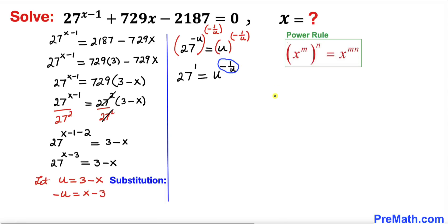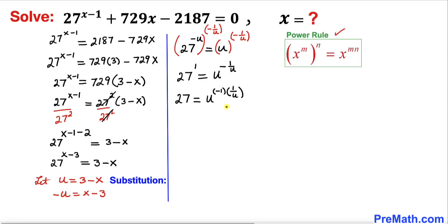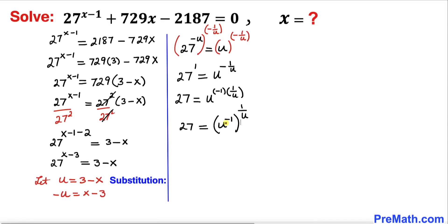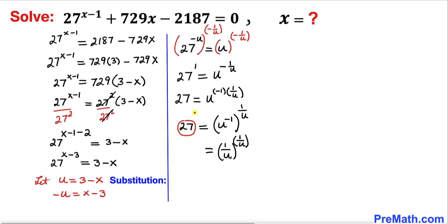We can write negative 1 over u as negative 1 times 1 over u. Applying the power rule on the right hand side, this becomes u to the power negative 1, whole raised to 1 over u. Since u to the power negative 1 is the same as 1 over u, the right hand side becomes (1 over u) to the power 1 over u. Also, 27 equals 3 cubed, so the left hand side is 3 cubed.